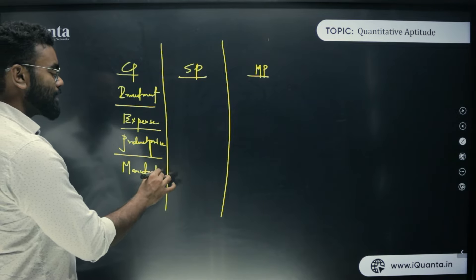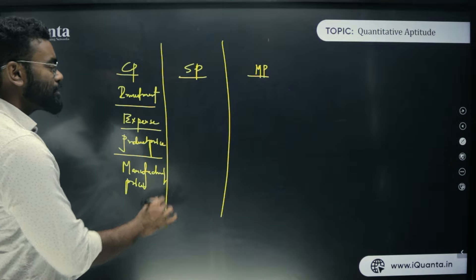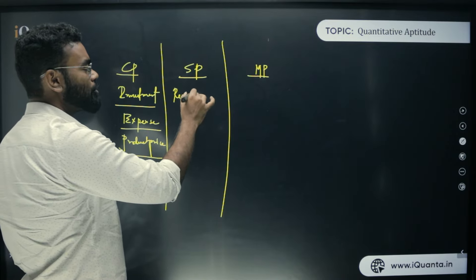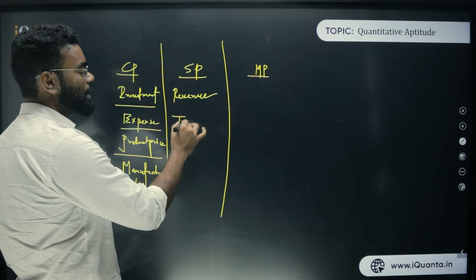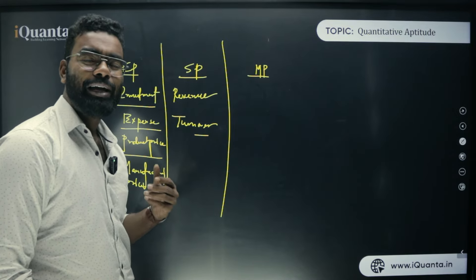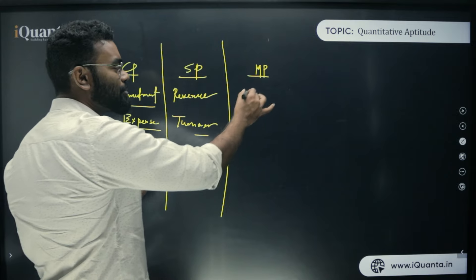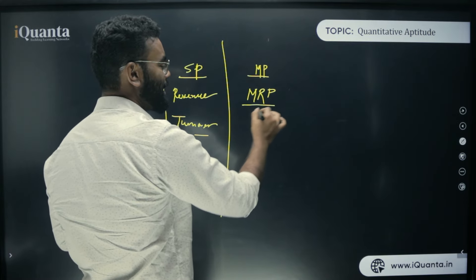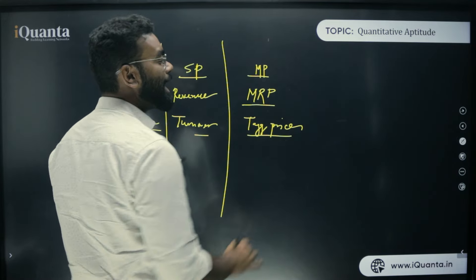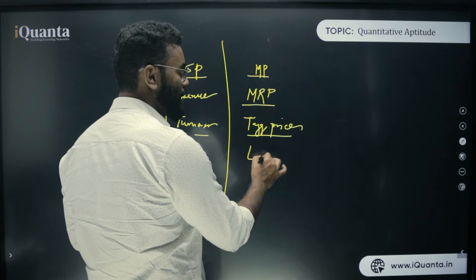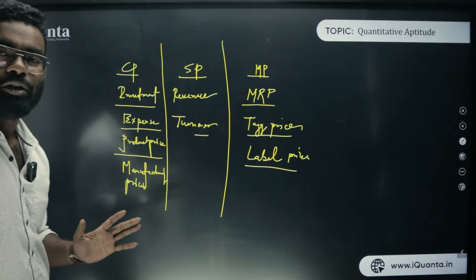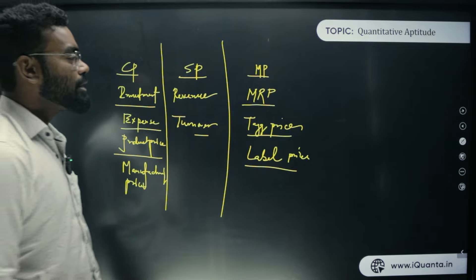In case of selling price, if you've done a business, your revenue works as a selling price, and your turnover also works as your selling price. For mark price, this is the price we generally see when we try to buy a product — the MRP (Maximum Retail Price). The tag price in a store like Pantaloons, or the label price, all fall under mark price. These are just different terminologies for the same concept.